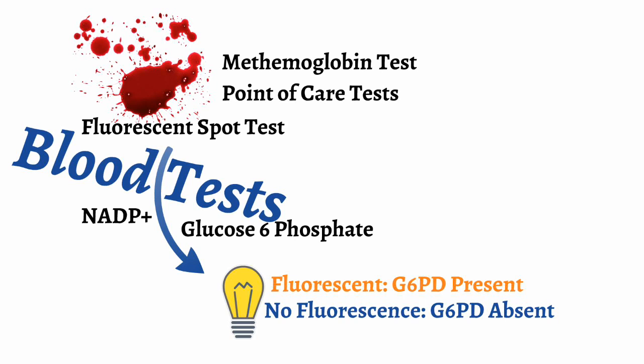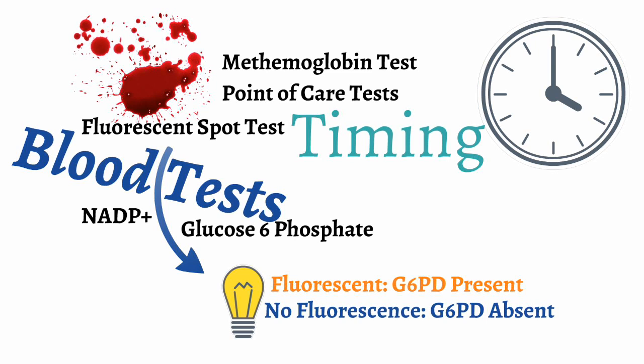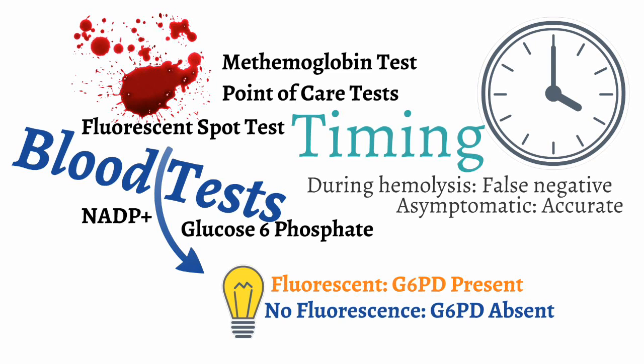Even though we have tests available to screen for and to identify G6PD deficiency, the timing of performing these tests is vital. During a hemolytic event in G6PD deficiency, the cells that are most deficient in G6PD are the ones that are hemolyzing. So if you test the blood of these patients during an episode, you're actually testing a largely unaffected or mildly affected population of cells. Testing during an episode can give you a false negative result, thereby missing the diagnosis of G6PD deficiency. If you test when a person is asymptomatic, then the affected RBCs will still be circulating, allowing you to obtain more accurate results. So remember to time your testing correctly to prevent missing the diagnosis.